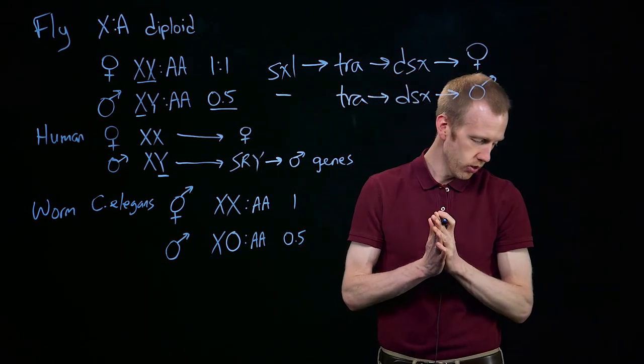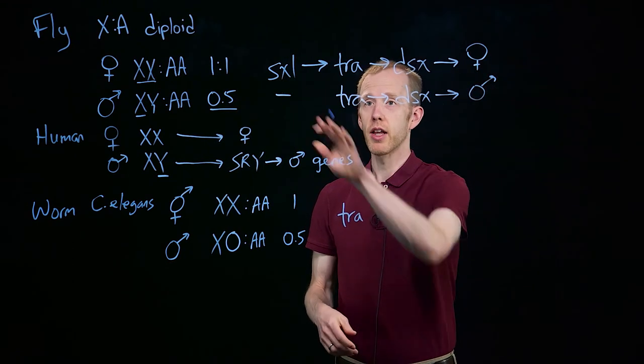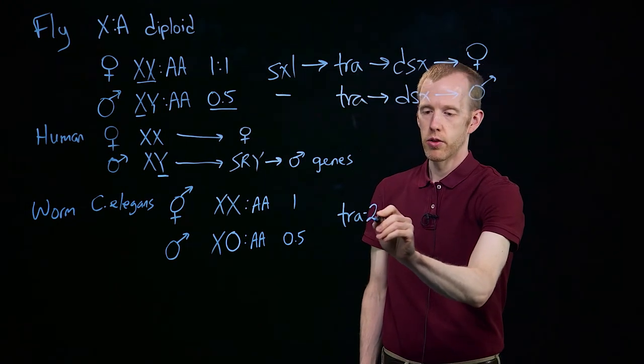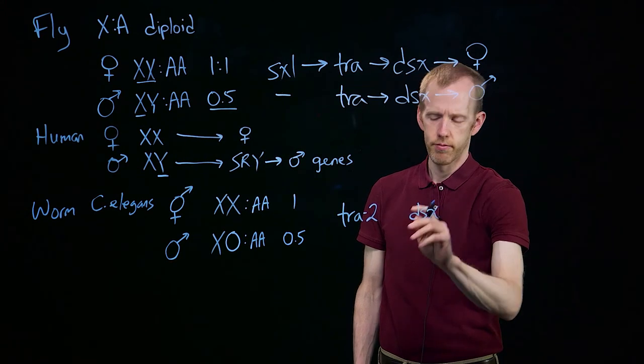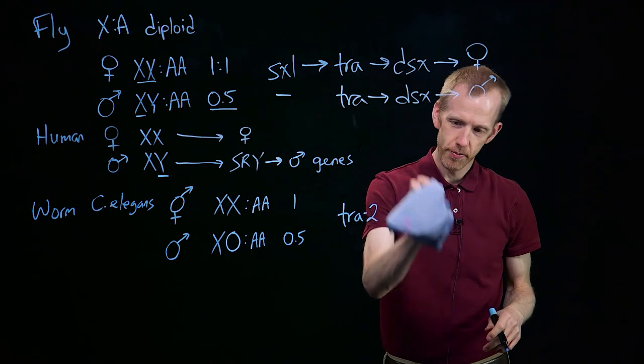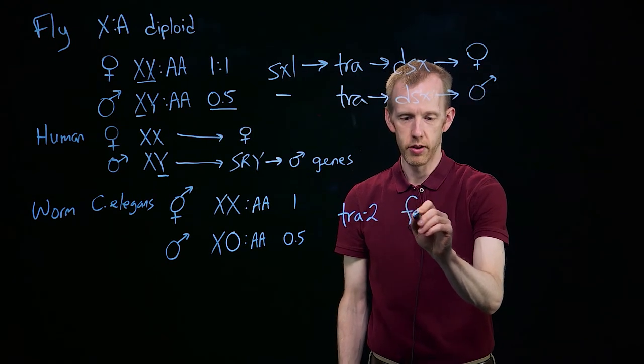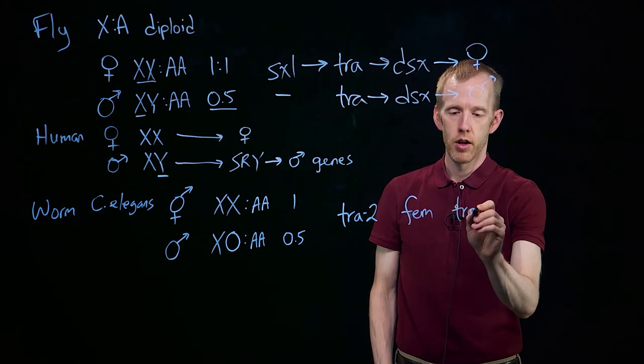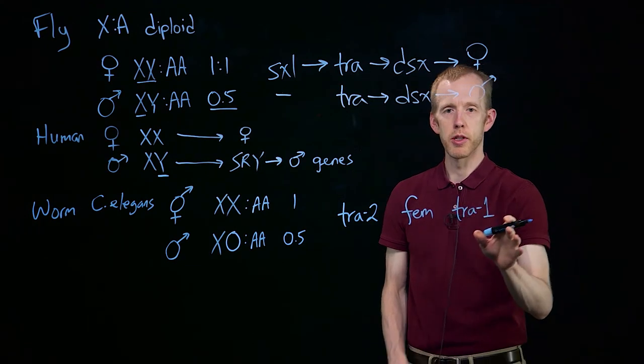And the way that this works in Caenorhabditis is that there's a cascade, much like this sequence of genes in Drosophila. There's a sequence of genes, TRA-2, not double sex, the FEM genes. There are three FEM genes. We're just going to represent them as FEM. A gene called TRA-1, and then an output from this pathway.